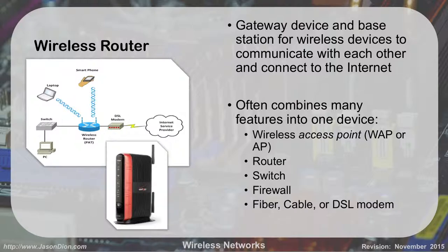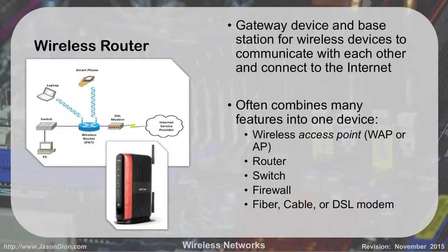A wireless router is your gateway device and base station for wireless devices to communicate with and connect to the Internet. Often one device combines many features. For instance, a Verizon gateway provides not just the fiber optic modem, but also a router, a switch, a firewall, and the wireless access point — also called a WAP or AP. The modem connects to the wireless router, which provides access to wireless devices, then a switch connects the PC. That Verizon device combines all of those networking functions into one box, as do most Comcast or Verizon modems at home — but really, it is four or five separate functions.